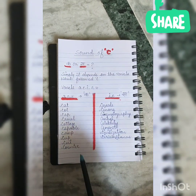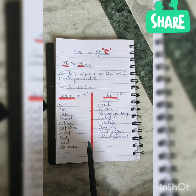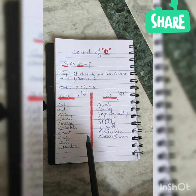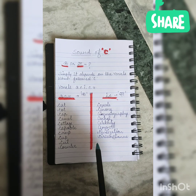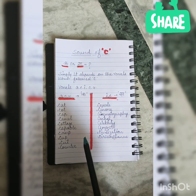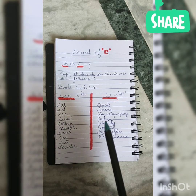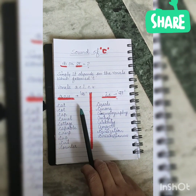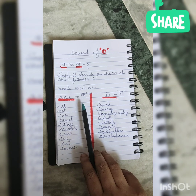Hello everyone, you all are welcome to my channel Study with Honey. Today we will discuss a very important topic: what is the exact sound of C? Is it 'ka' or 'sa'? Yani ki C ki jo sound hoti hai English alphabets mein, wo kya hoti hai? A lot of times you can see that the sound of C is 'ka', and a lot of times the sound of C is 'sa'. So what is the exact sound? We will discuss this in detail in this video.